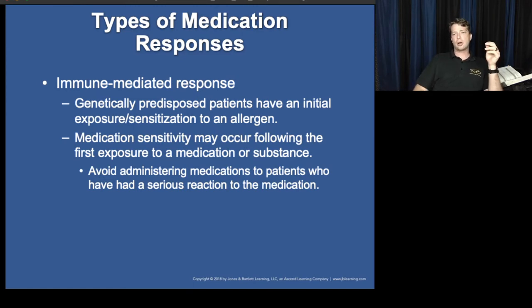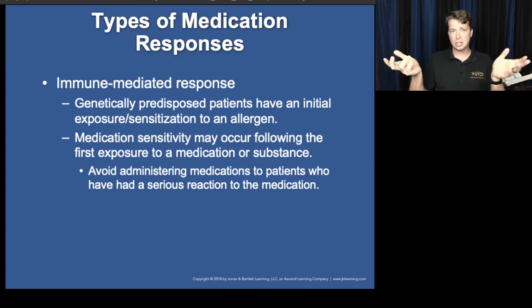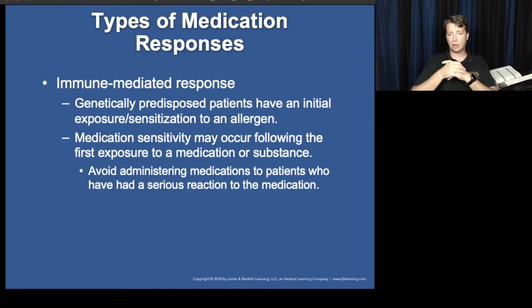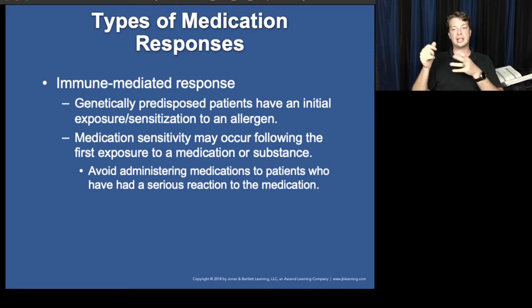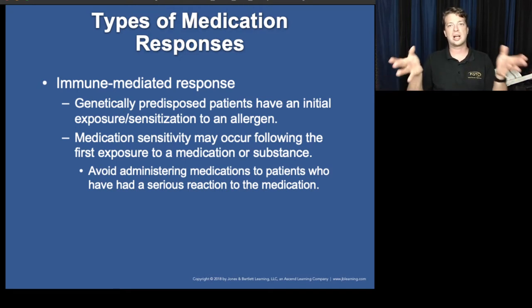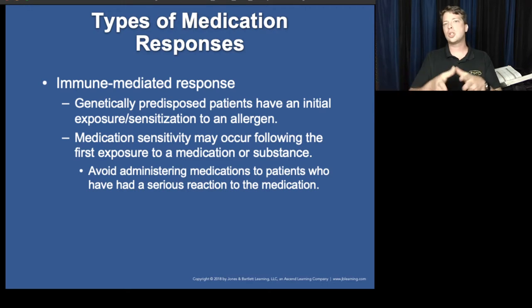Immune-mediated responses: these are patients where we've given the medication, expected it to be fine, and then all of a sudden we have weird reactions. This is where we get into allergic reactions, anaphylactic reactions, and anaphylactoid reactions. From our last unit, we talked about immune and inflammatory responses — cells like mast cells and basophils. Mast cells stay in connective tissue, skin, and adipose tissue, waiting for an infection. Basophils float through the bloodstream looking for inflammation and issues.